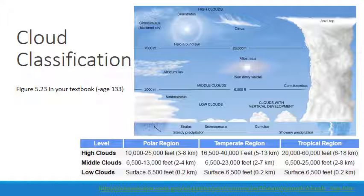In addition, the term nimbus — which is Latin for heavy rain — is used in the name of a cloud that produces significant precipitation. So the combination of nimbo and stratus, nimbostratus, refers to a relatively flat rain cloud. You can see in this chart that nimbostratus is over in the bottom left.